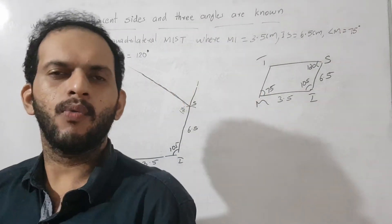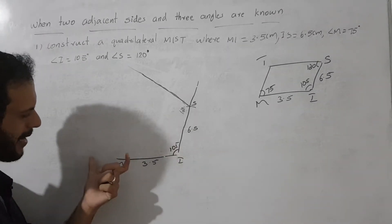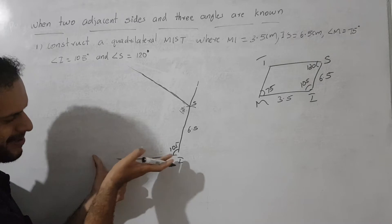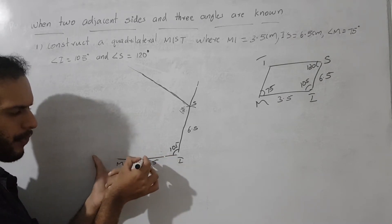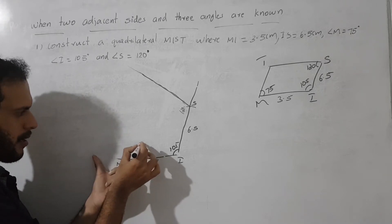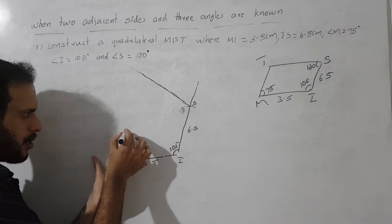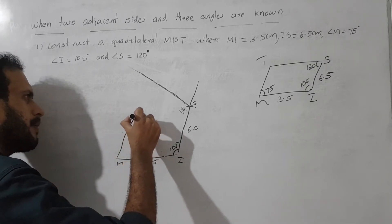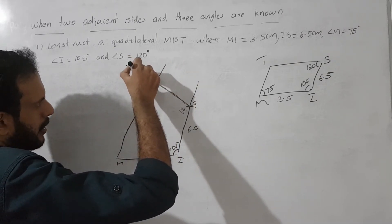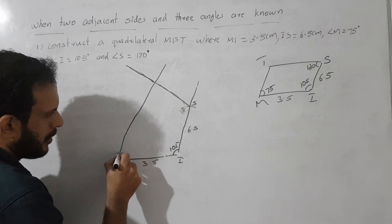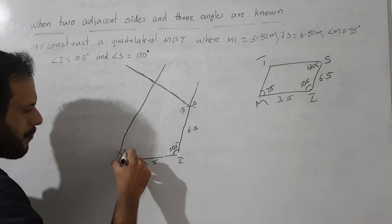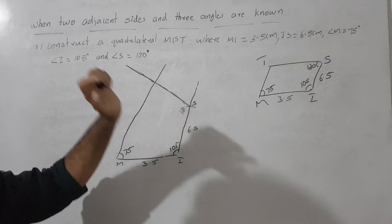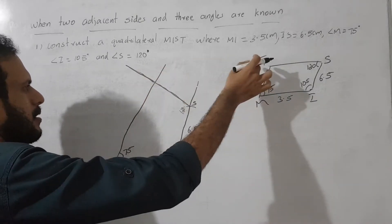What is remaining? The angle value of M, which is 75°. We keep the protractor on M with the middle at M, and 0 lies on this side. We start counting and mark 75°. We draw the line and extend the arm of the angle at 75° to meet the arm of the angle at S (120°). The meeting point of these two arms is T.